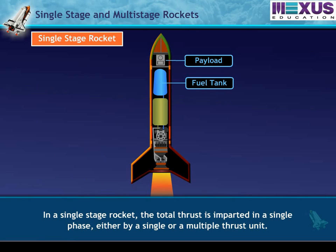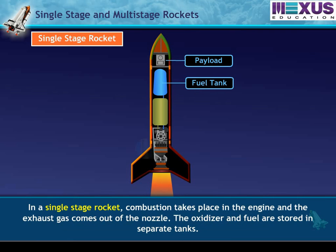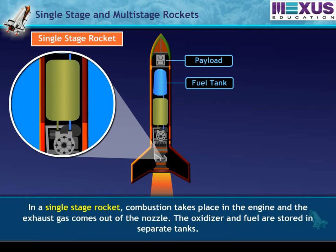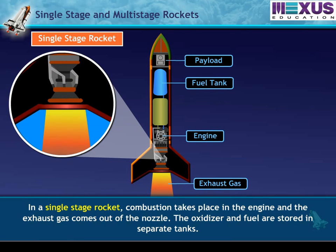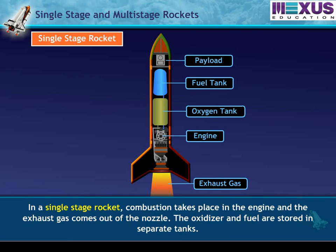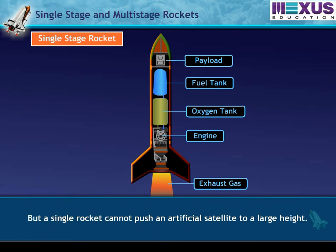In a single-stage rocket, the total thrust is imparted in a single phase, either by a single or multiple thrust unit. Combustion takes place in the engine and the exhaust gas comes out of the nozzle. The oxidizer and fuel are stored in separate tanks. However, a single rocket cannot push an artificial satellite to a large height.